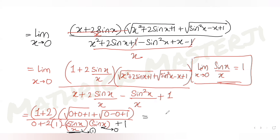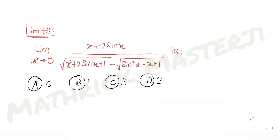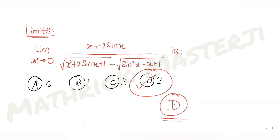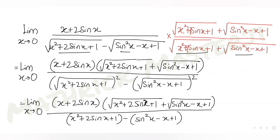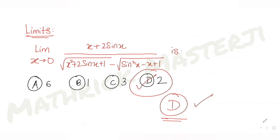So the limit equals 6 divided by 3, which gives 2. Wait — the 3s cancel: numerator factor 3 divided by denominator 3 leaves 1 plus 1 = 2. The answer is 2, which corresponds to option D. So D is the correct answer. We rationalized, simplified, divided by x, and applied the limit identity to get the answer.